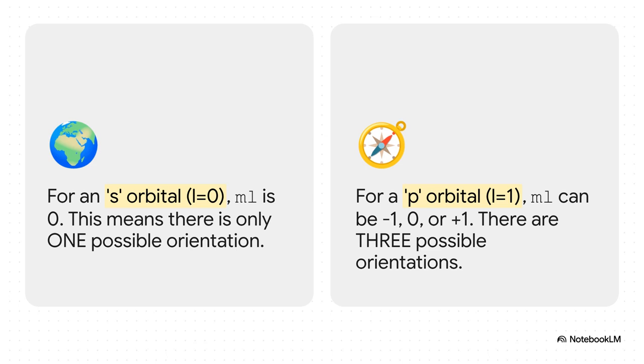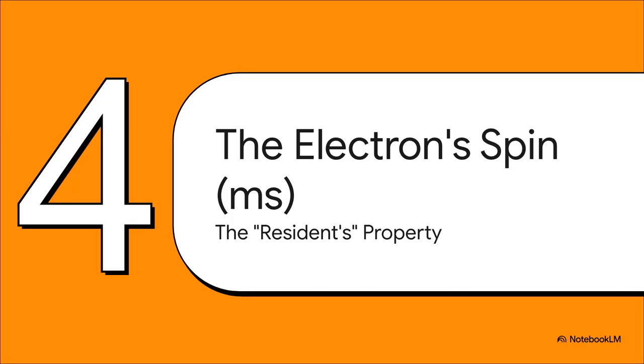But for a p orbital, where L is 1, ML can be negative 1, 0, or positive 1. That's three different values, which means there are three possible orientations for that dumbbell shape. One along the x-axis, one along the y, and one along the z. So we have the city, the street, and the house number.